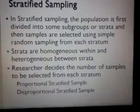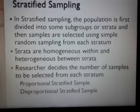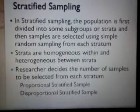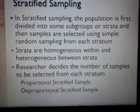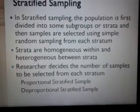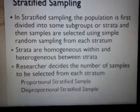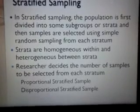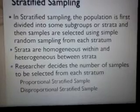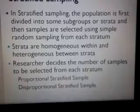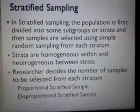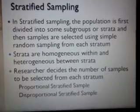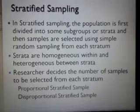Another example: if we want to collect data from students, we can divide students into different subgroups or strata depending on whether they study in state board, CBSE, or ICSE schools. So we have three strata: students studying in state board, students studying in CBSE, and students studying in ICSE schools. From these three strata, we then choose samples using simple random sampling.